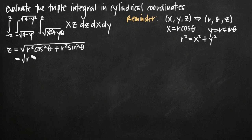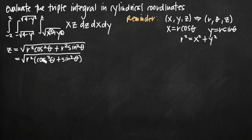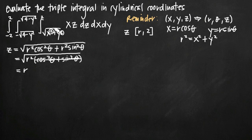We can factor out r squared, leaving r squared times cosine squared theta plus sine squared theta. From the Pythagorean trigonometric identity, cosine squared theta plus sine squared theta equals 1. So r squared times 1 is r squared, and taking the square root gives us r. Therefore, our lower limit of integration for z is r, and z goes from r to 2.